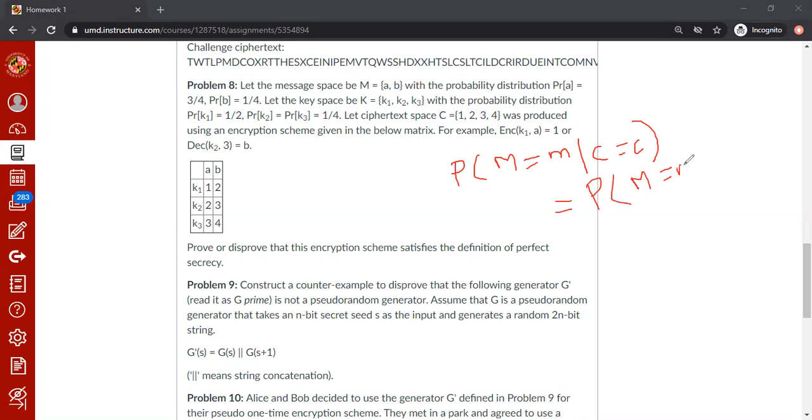what it means is that after seeing the ciphertext, you don't gain any new knowledge about the plaintext. That's basically the meaning of this conditional probability statement. If this is true for all m and c, then we say the encryption scheme satisfies perfect secrecy definition.